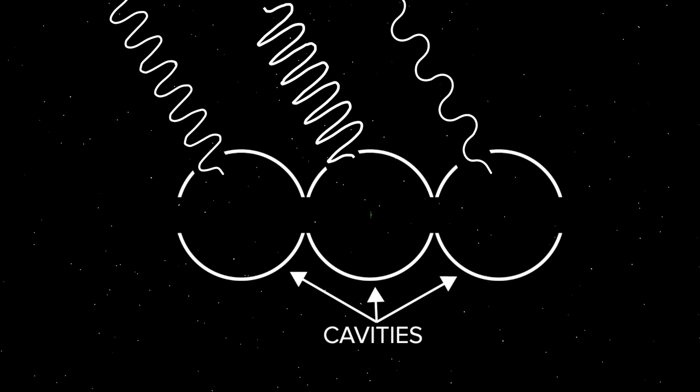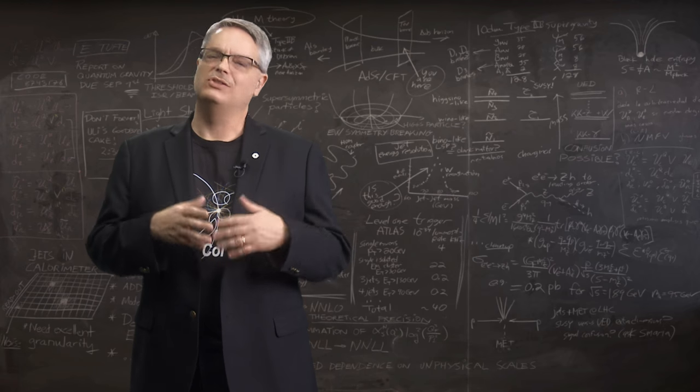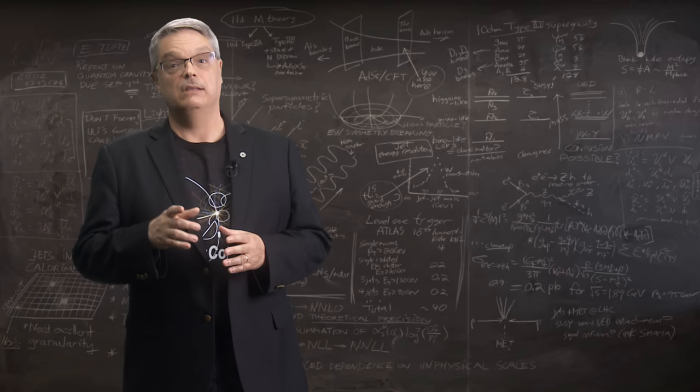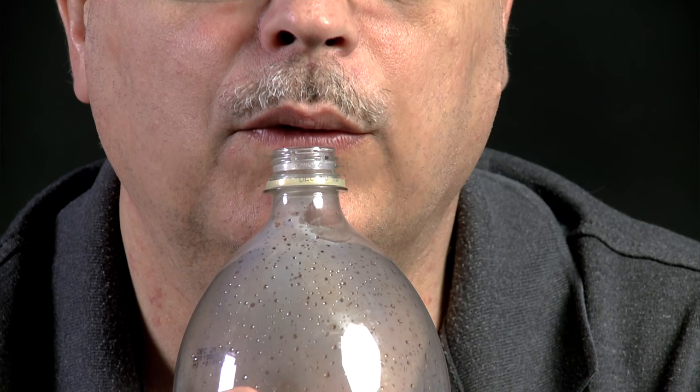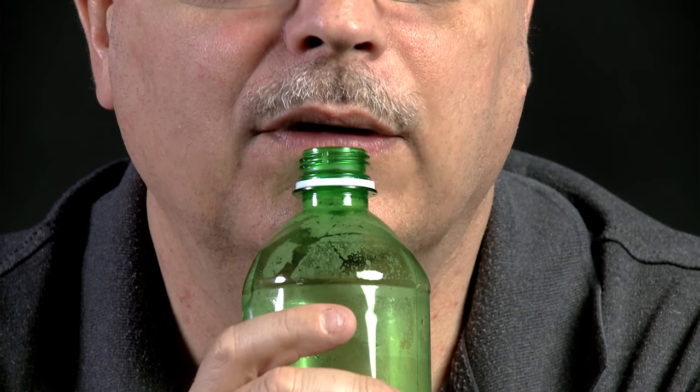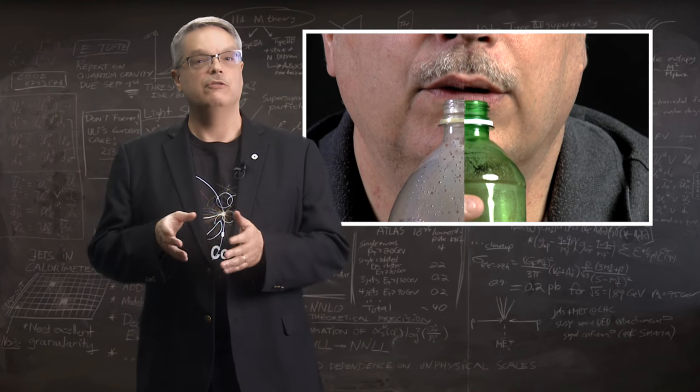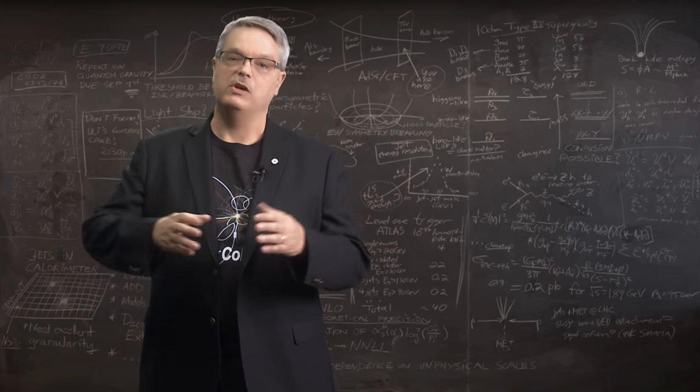To get an idea of how that works, think about what happens when you blow the air out of your lungs. It just sounds like the wind. But blow across the top of a two liter soda bottle and you get a characteristic tone. Blow across the top of a smaller soda bottle and you get a higher tone. The soda bottle stands in for the accelerator cavity and you can see how different sized cavities prefer different tones which means different frequencies.